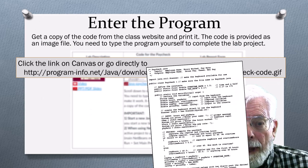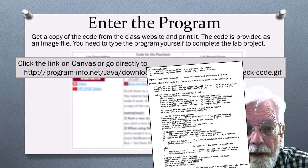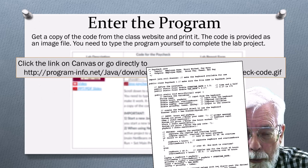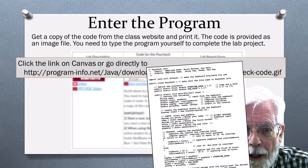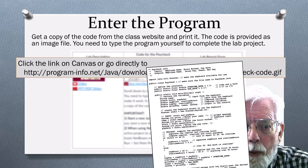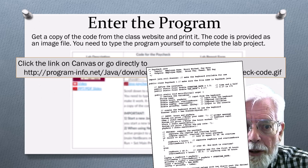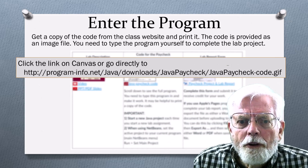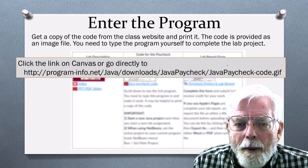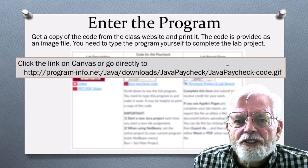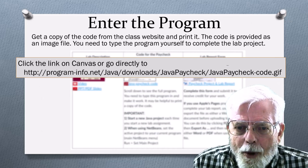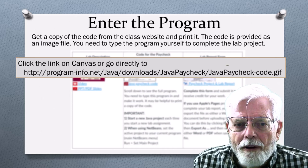Enter the program. Get a copy of the code from the class website and print it if you can. The code is provided as an image file. You need to type the program yourself to complete the lab project. You will learn far more by entering the program yourself than if you have someone else enter it in or use a scanner to convert the image of the program code into actual Java code.